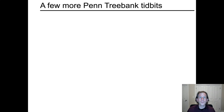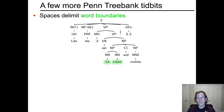A few more tidbits about the Penn Treebank: spaces always delimit word boundaries. For example, 'ice cream' to a linguist is probably just a single word — you can hear it from the intonation, as there's only one stress on 'ice.' It's 'ice cream,' probably a single word, but it's represented orthographically as two words and the Penn Treebank represents it as two words.